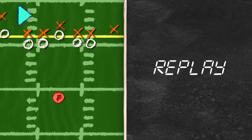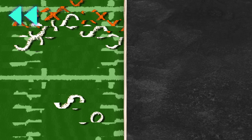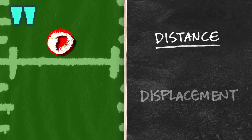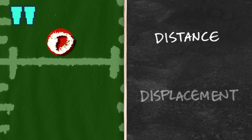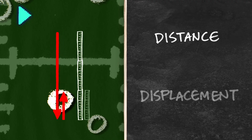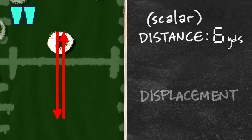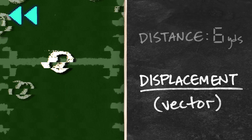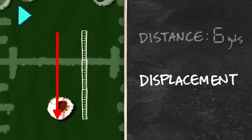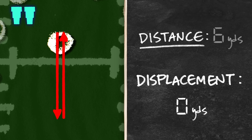He takes a snap, drops three steps, plants his back foot — there's a blitz coming off the edge, he steps up to avoid the rush. Here's the difference between distance and displacement. Distance is a measurement without identifying where he moved — it's a scalar quantity. When the quarterback makes a three-step drop he moves about three yards back, then about another three yards forward when he steps up into the pocket, so he moves a total of six yards. That's distance — that's a scalar. Displacement is a vector quantity describing how far out of place the object is. The quarterback dropped back three yards and moved forward three yards — he's in the exact same place where he started. So his displacement is zero yards. Distance: six yards. Displacement: zero yards.